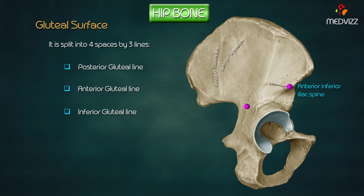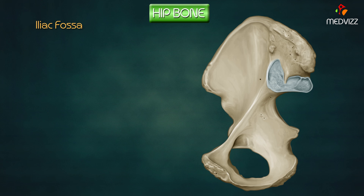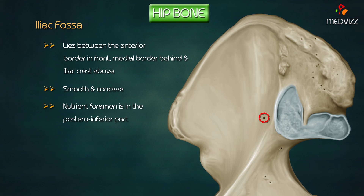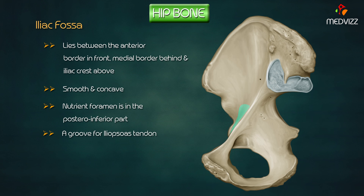The inferior gluteal line extends from above and behind the anterior inferior iliac spine, running down and back to the upper part of the greater sciatic notch. The iliac fossa is an area lying between the anterior border in front, medial border behind, and iliac crest above. It is smooth and concave, presenting a nutrient foramen in its posterior inferior part which transmits the nutrient artery derived from the ilio-lumbar artery. A groove between the anterior inferior iliac spine and iliopubic eminence lodges the iliopsoas tendon.